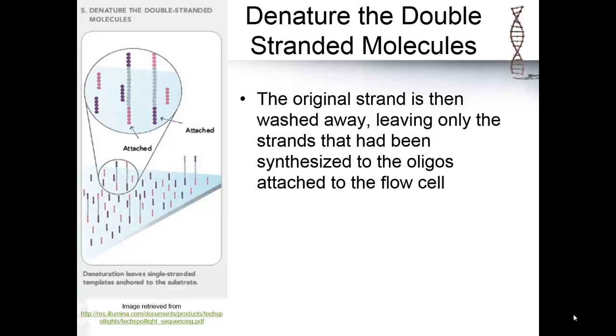The flow cell oligos act as primers, and a strand complementary to the library fragment is synthesized.